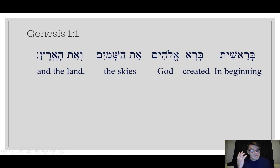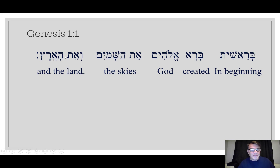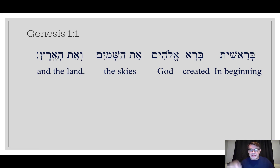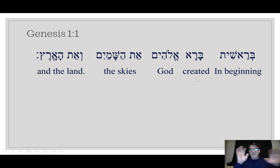The hepak doubling makes it definite — shamayim, heaven. Ve-eit means 'and the,' with a direct object approaching. Then we have the article with compensatory lengthening because Aleph says 'I'm a guttural, I don't do doubling.' So you get the gist of the sentence: in the beginning, or in the beginning of God creating the heavens and the earth, or in the beginning God created the heavens and the earth.